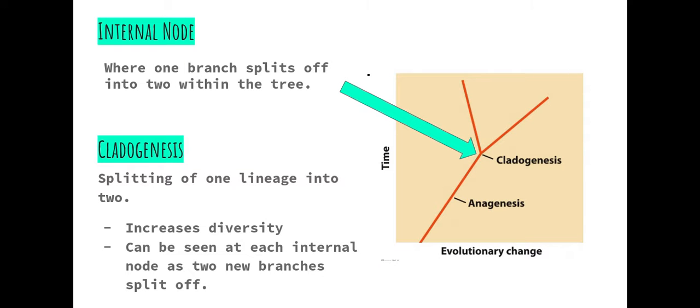An internal node refers to the spot in a phylogenetic tree where one branch splits off into two. This is the visual representation of cladogenesis which increases diversity.